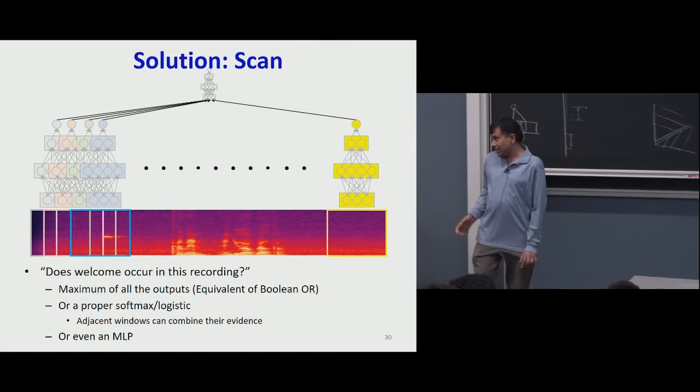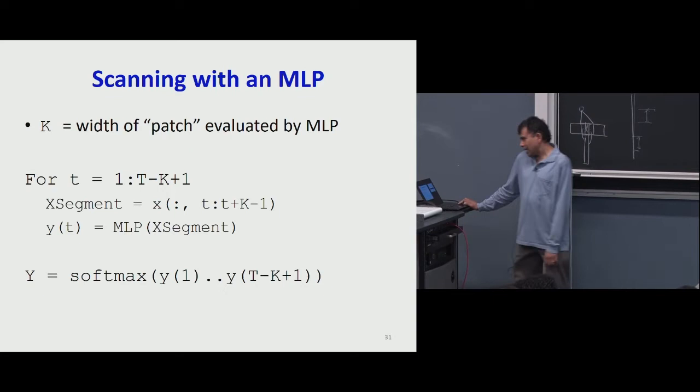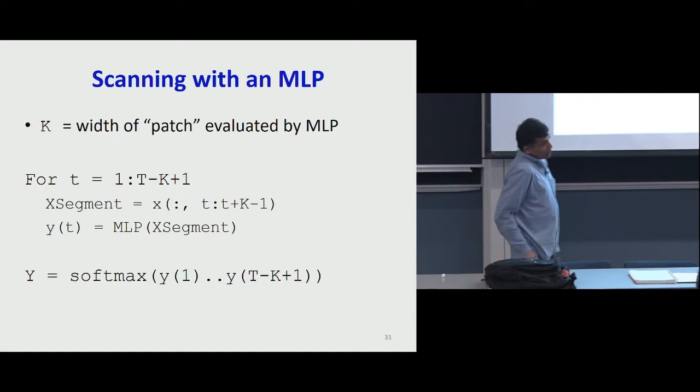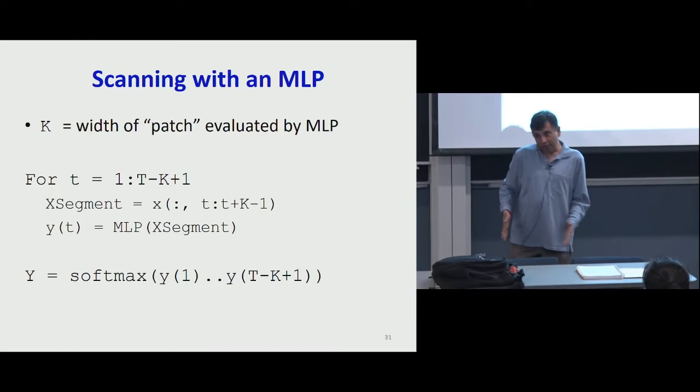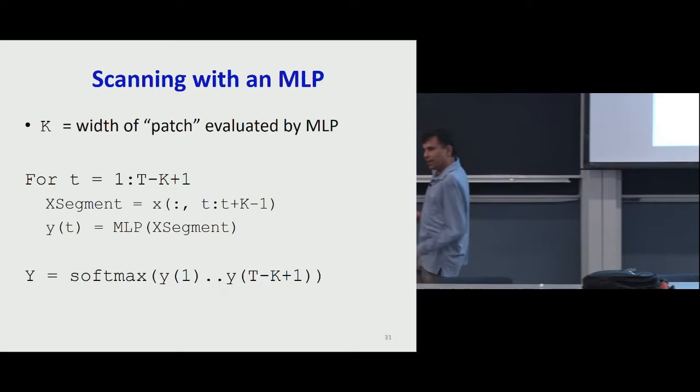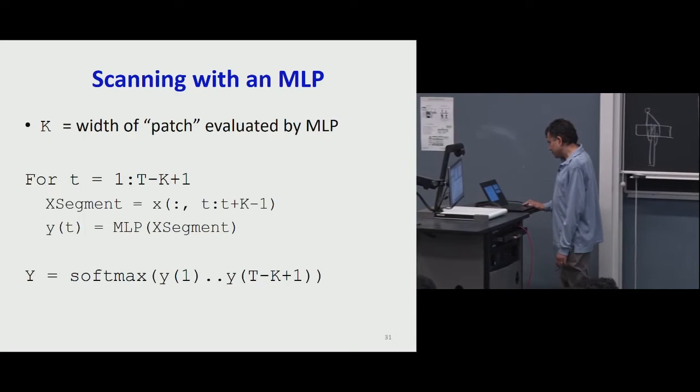So I have a scanning MLP. I scan with an MLP: I decide how wide the patch is over which I'm looking for 'welcome', then for t going from 1 to N I scan through time, pull out a segment at each location, pass it through my MLP, get one decision per instant, and put that collection of decisions through a softmax or max to get the output.